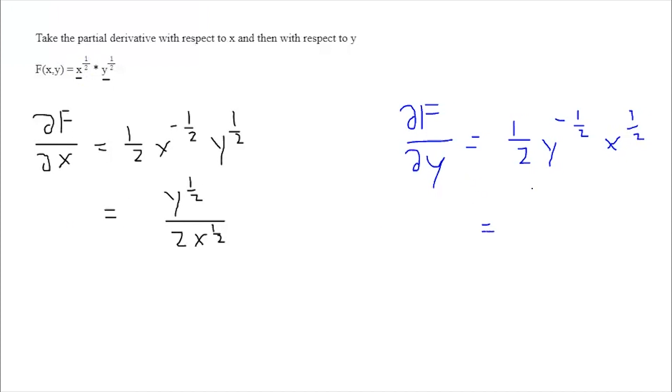In order to simplify, we would say x to the 1 half over 2 y to the 1 half. This would be our partial derivative with respect to variable y.